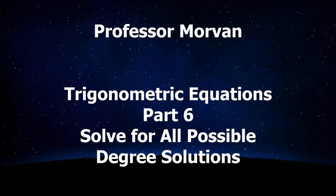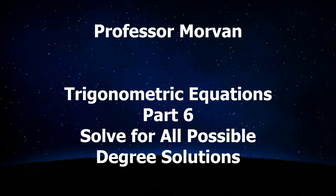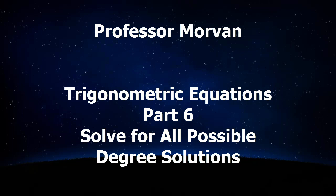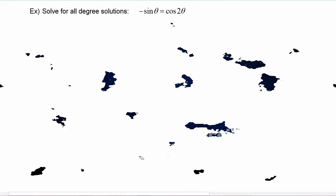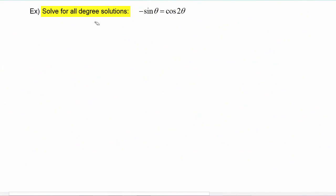In part six of our lesson on trigonometric equations, you will learn how to solve for all possible degree solutions. Here we have to solve for all degree solutions. We are given negative sine theta is equal to cosine of two theta. We have two different trig functions and two different arguments.